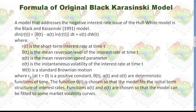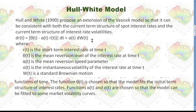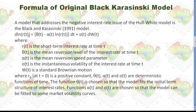The formula for the Black-Karasinski model is very similar to the Hull-White model's formula. The key difference is that the Black-Karasinski model has a log term applied to the interest rate. All the parameter definitions are similar, and r0 is a positive constant. Similarly, θ(t), α(t), and σ(t) are deterministic functions of time.